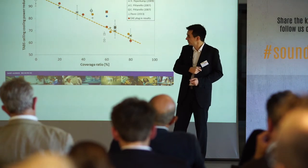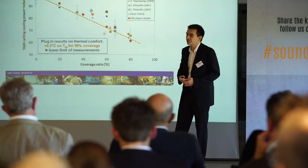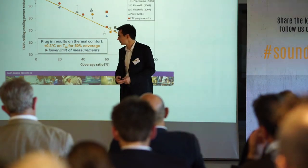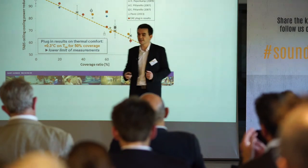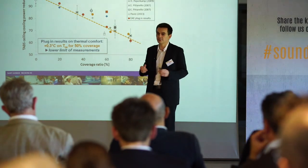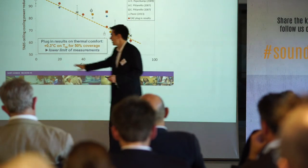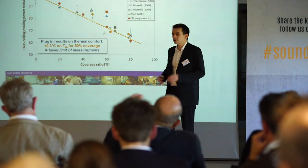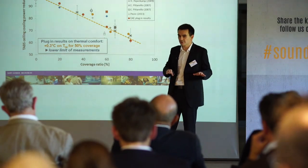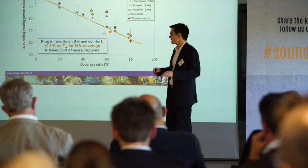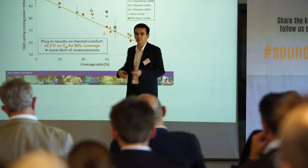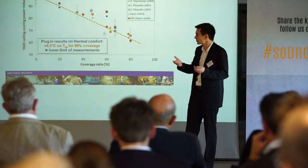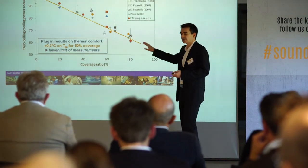We discussed cooling efficiency, but what about thermal comfort? If I run my model, I can see that increasing the ceiling coverage ratio leads to an increase in operative temperature of 0.3 degrees for 50% ceiling coverage ratio. If you recall, this is close to the measurement done in the WUPA tower, but it's the lower limit of measurements. Some other experimental papers show higher effects. So for the next step of this work, it will be important to validate this thermal comfort part with new measurements.